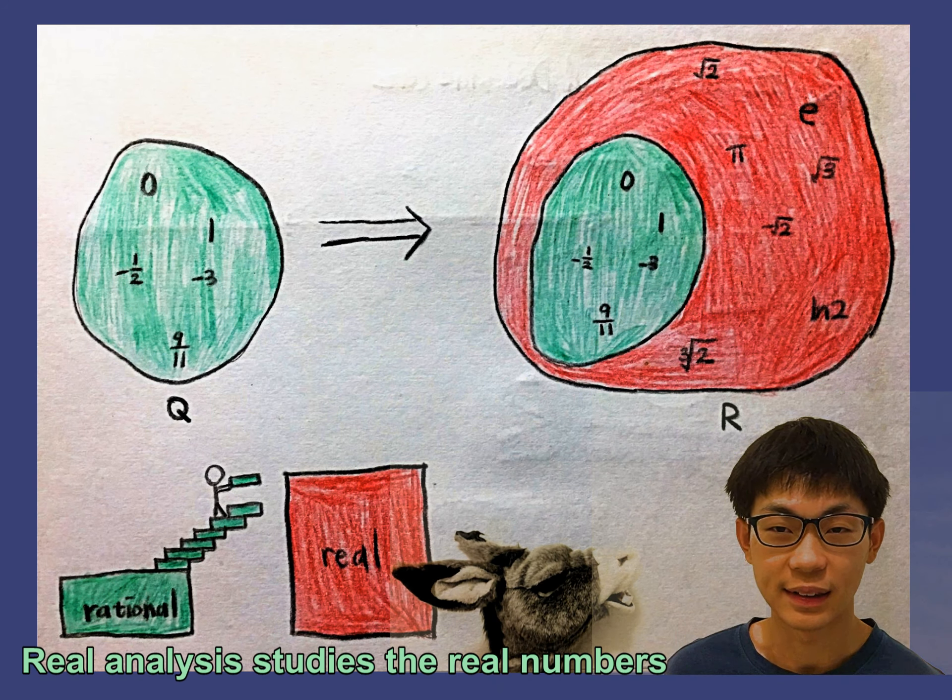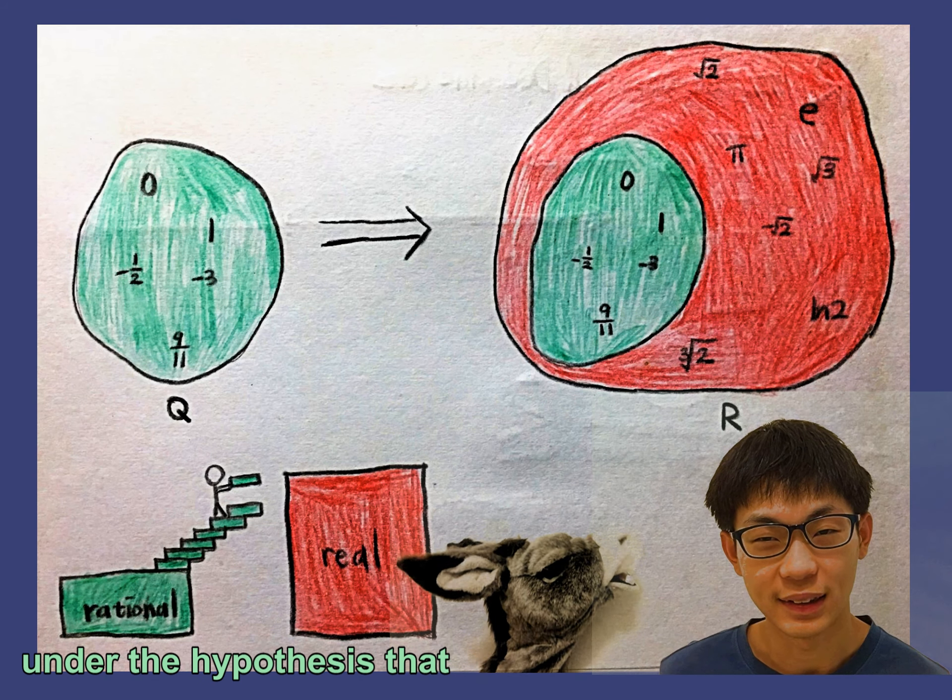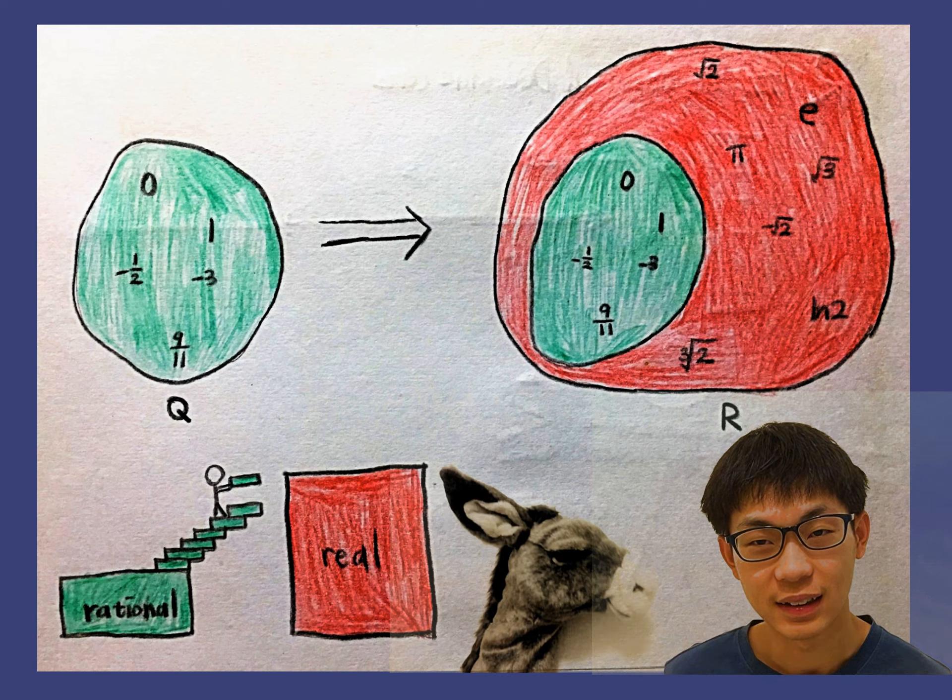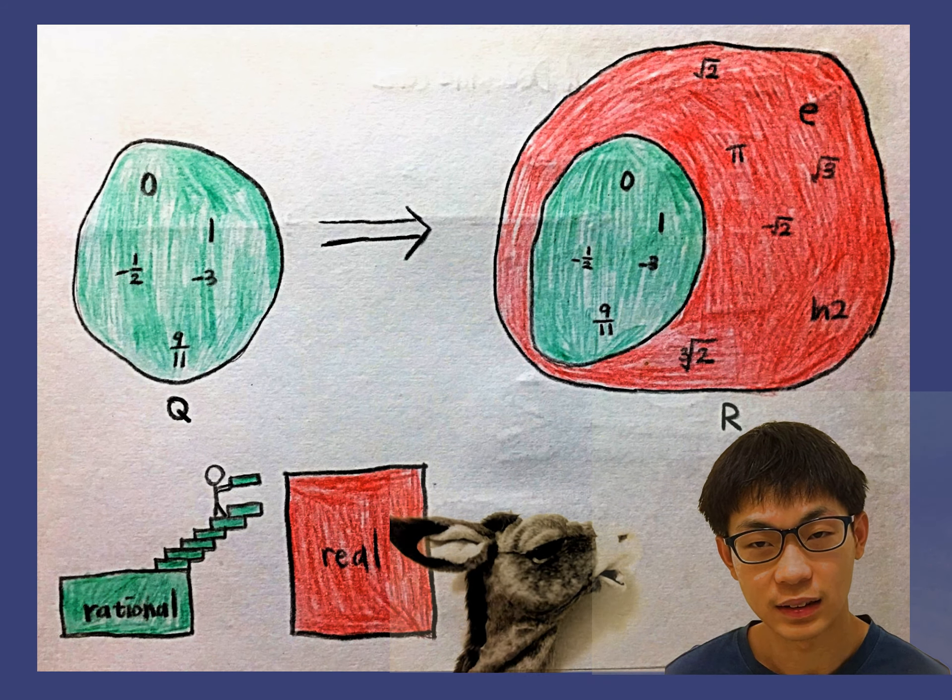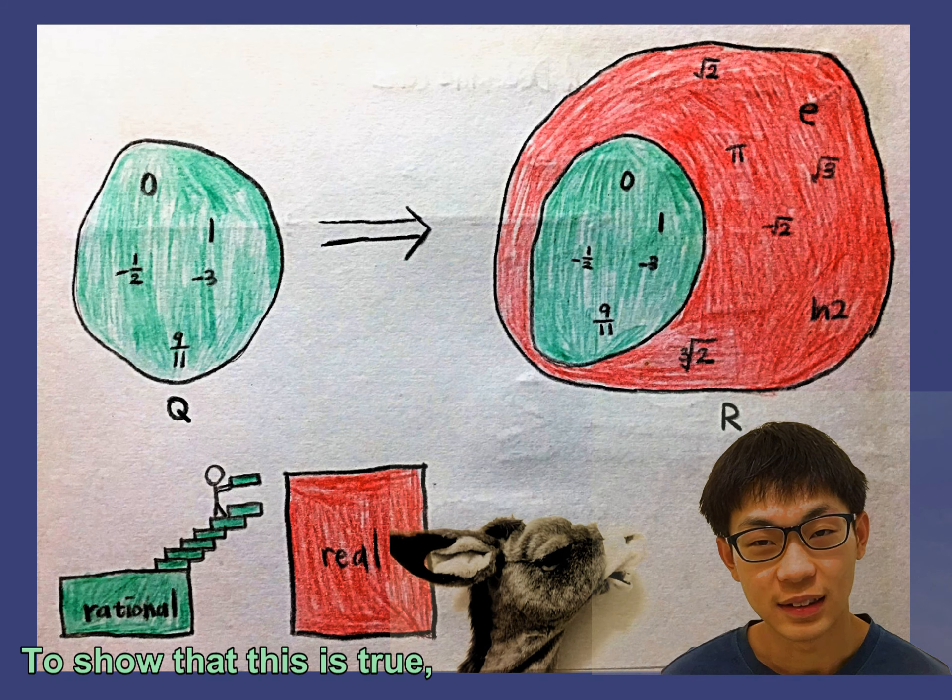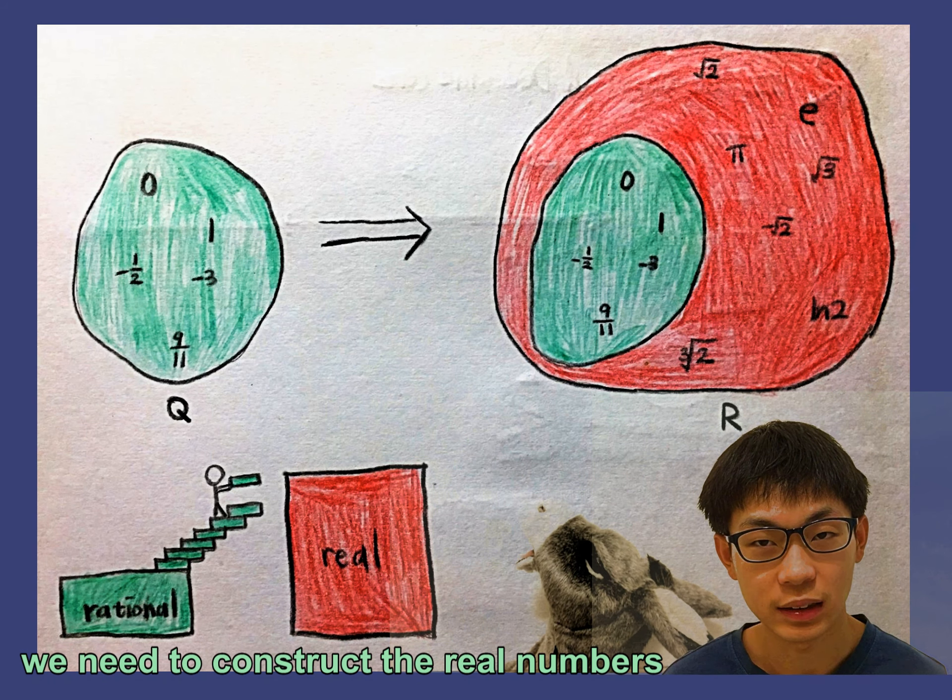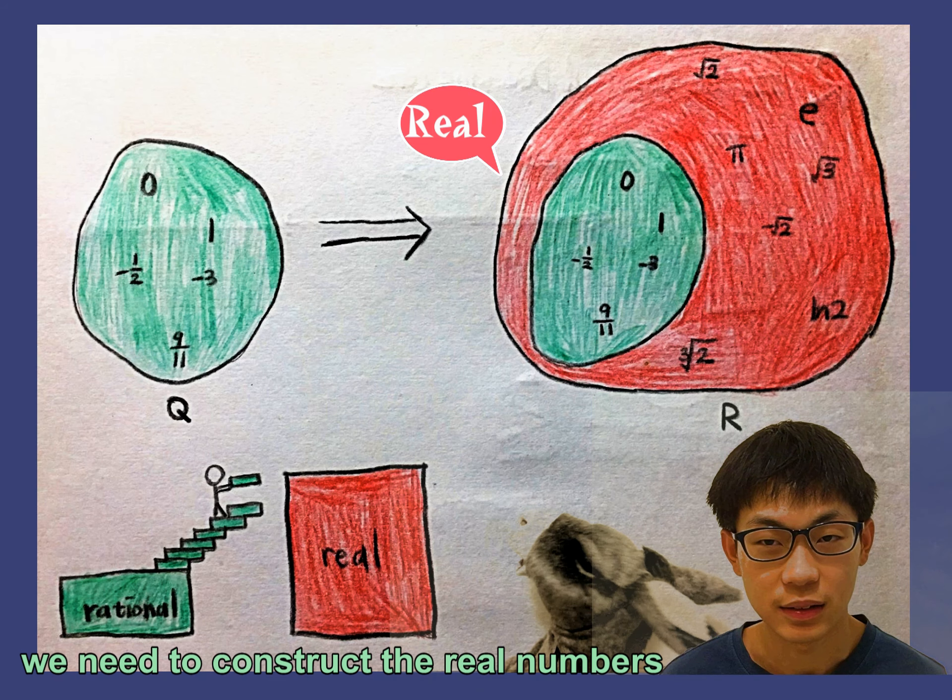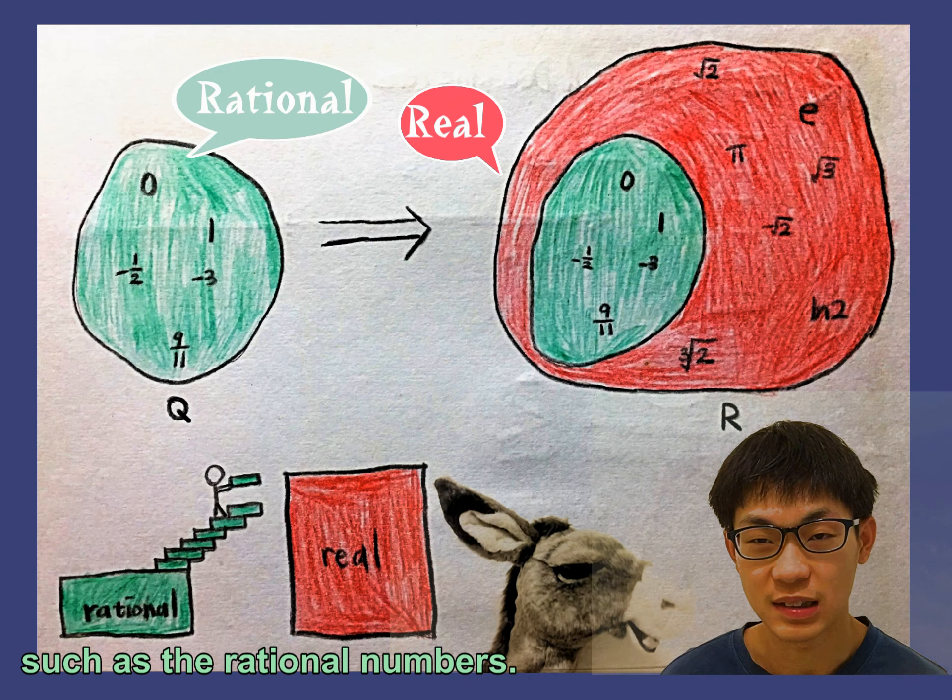Real analysis studies the real numbers under the hypothesis that they form a complete ordered field. To show that this is true, we need to construct the real numbers from something simpler, such as the rational numbers.